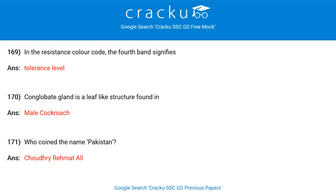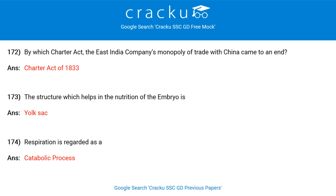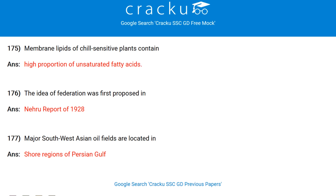Who coined the name Pakistan? Chaudhary Rahmat Ali. By which Charter Act did the East India Company's monopoly of trade with China come to an end? Charter Act of 1833. The structure which helps in the nutrition of the embryo is the yolk sac. Respiration is regarded as a catabolic process. Membrane lipids of chill-sensitive plants contain a high proportion of unsaturated fatty acids. The idea of federation was first proposed in the Nehru Report of 1928.